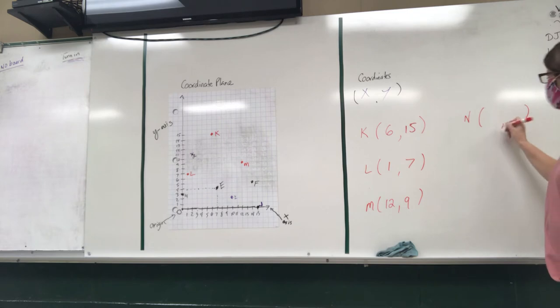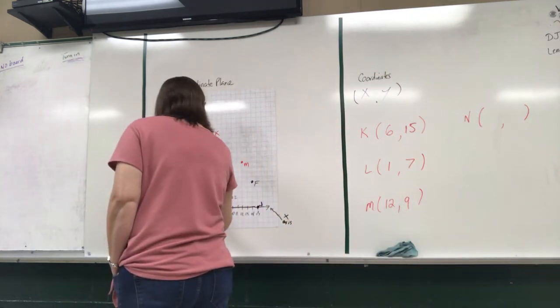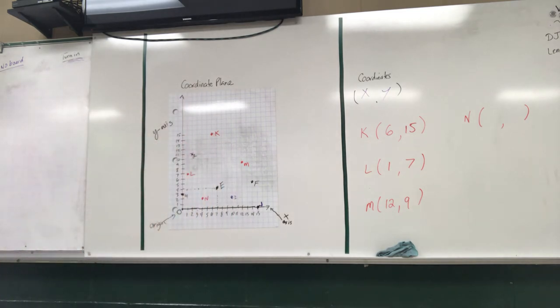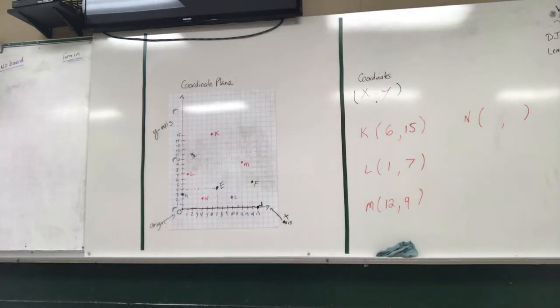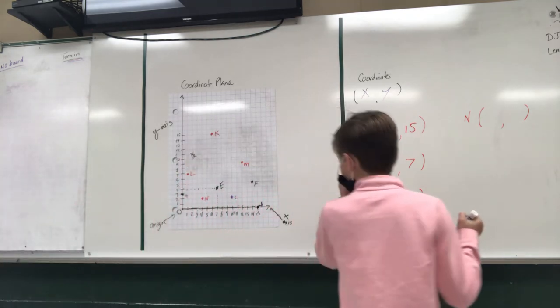Alright, I want somebody to find N for me. Alright, coordinates for N, Parker. This one should be right under paper. It's easy. It's right under paper. If you do this wrong, I'll be laughing.